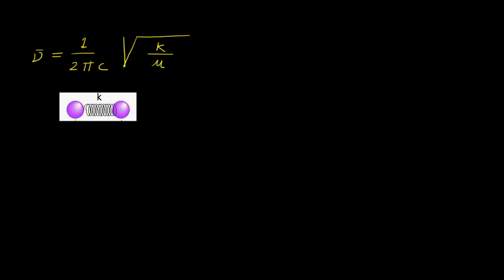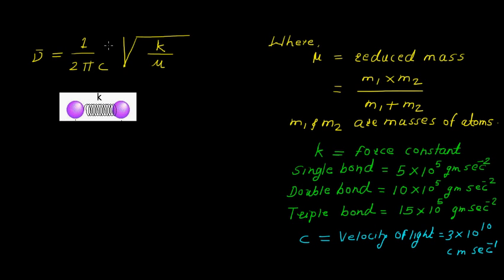Here in this formula you can see that k is the force constant, mu is reduced mass where mu equals m1 times m2 divided by m1 plus m2. m1 and m2 are the masses of the atoms.